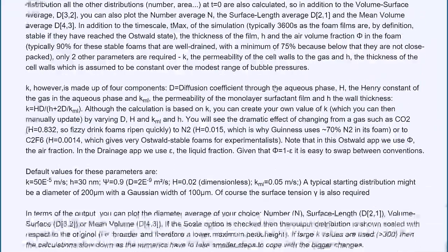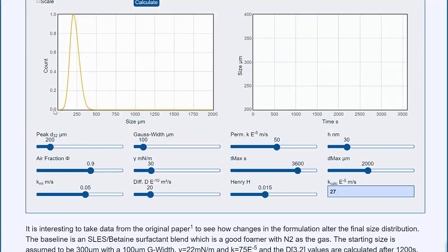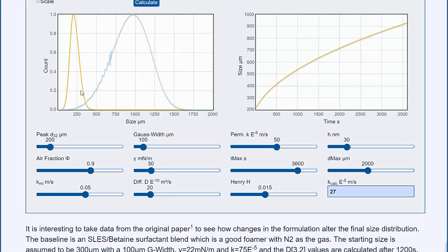If you start with a foam with bubbles of this sort of size and leave it around for a while, then the average size grows, and the width of the distribution grows. And this is Ostwald ripening.